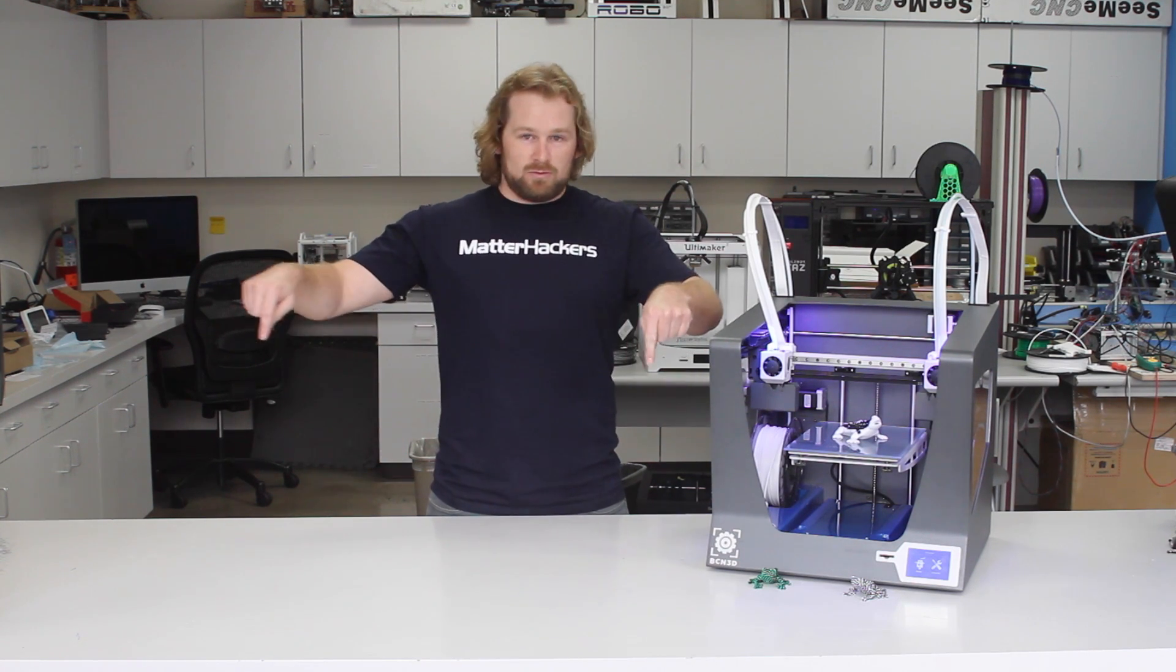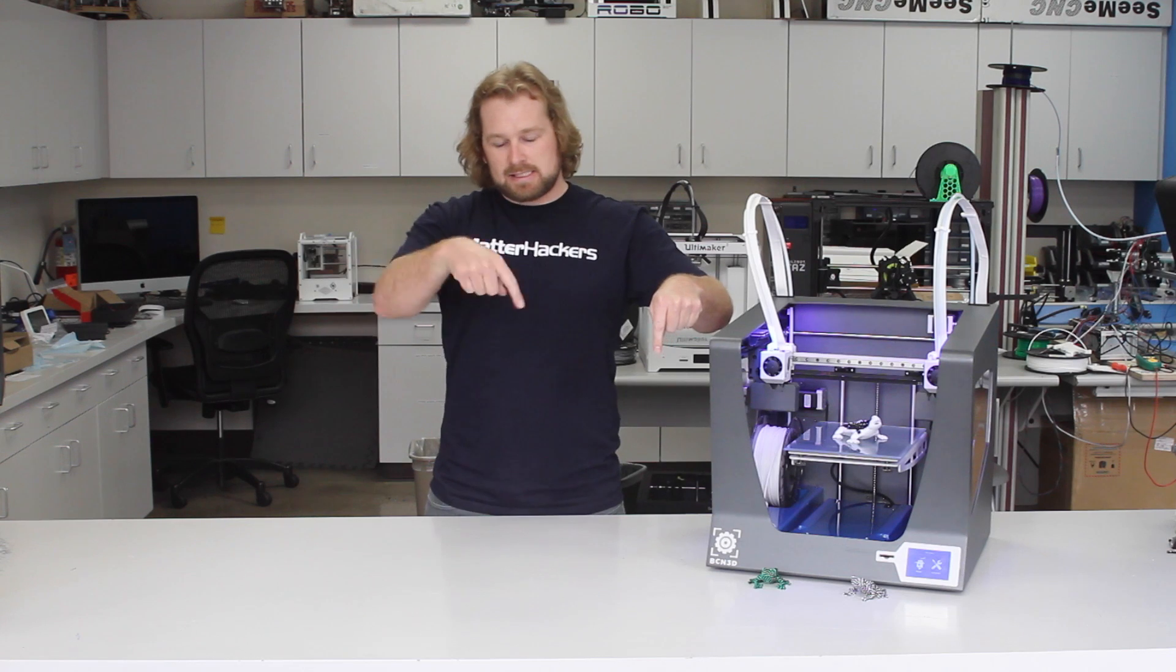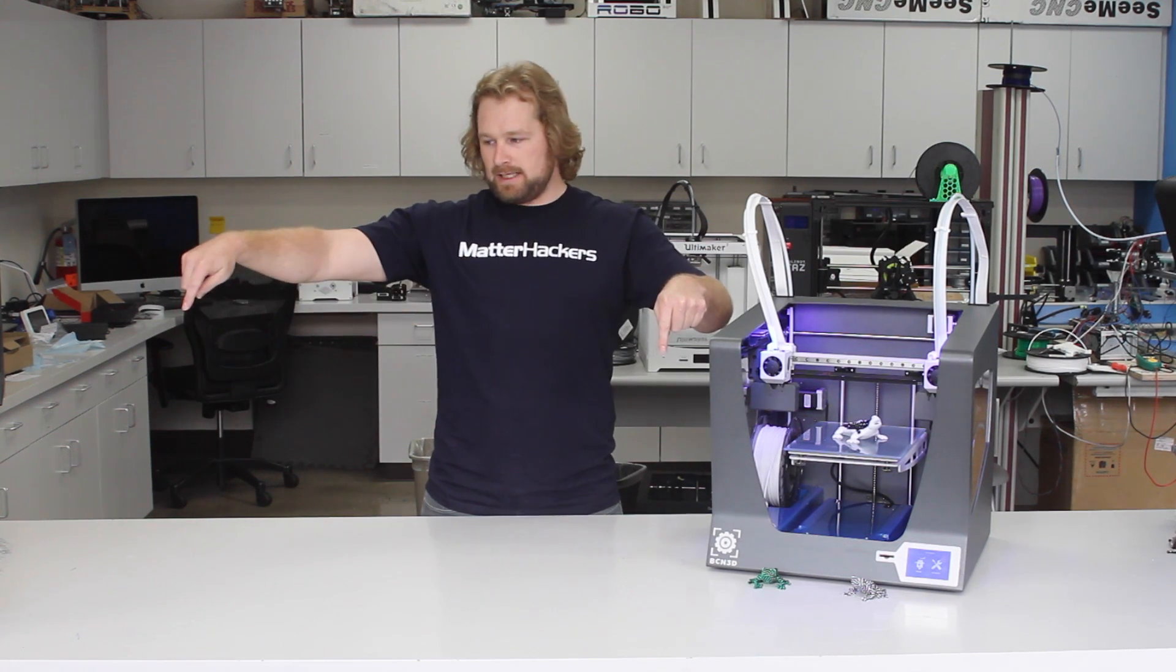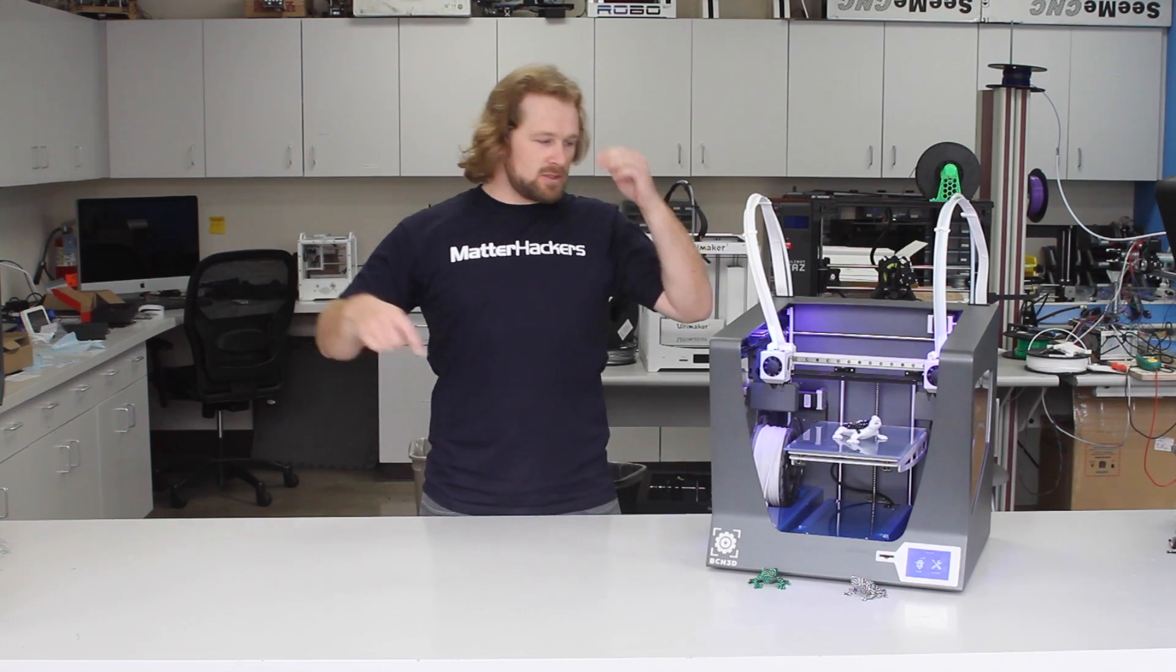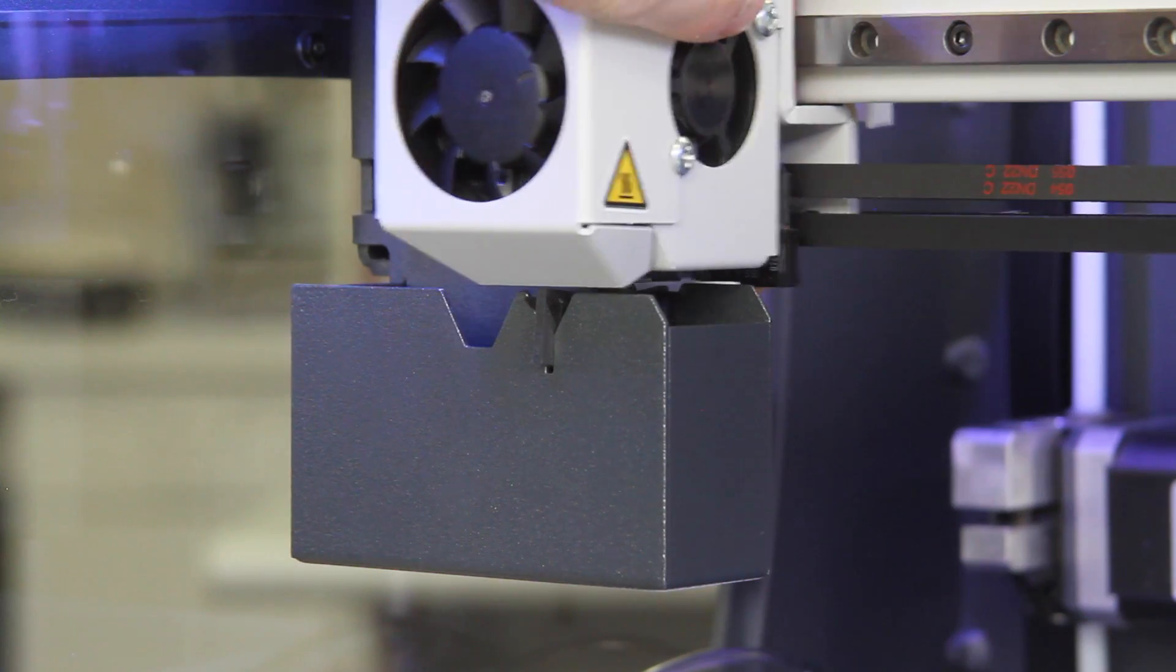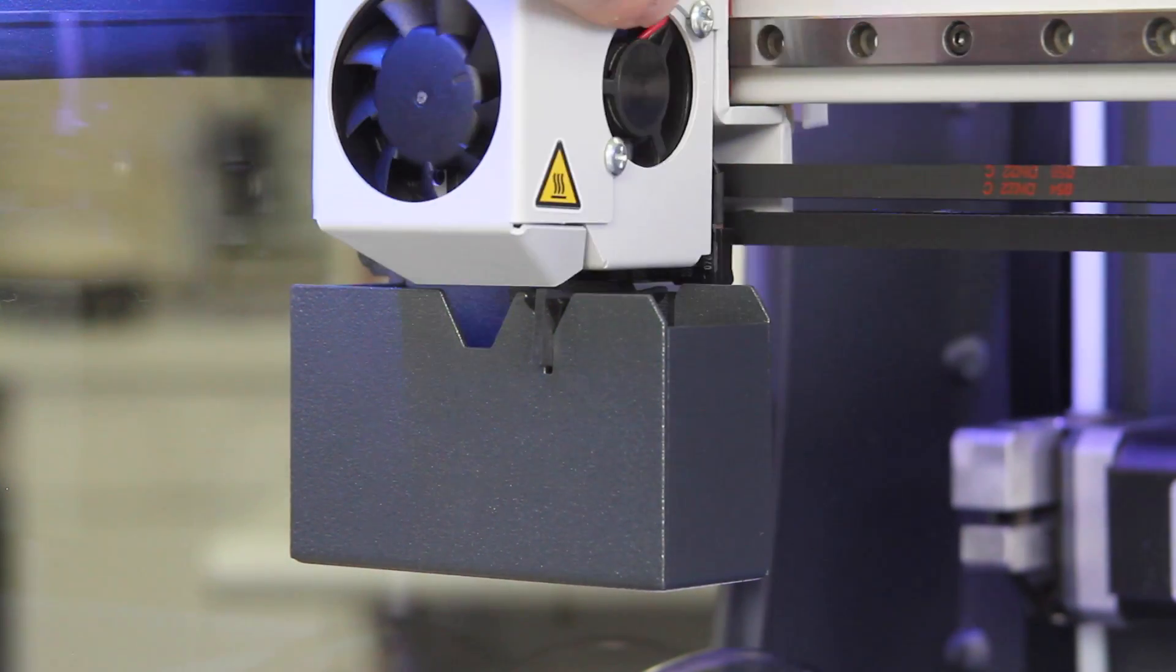This independent dual extrusion system means that we'll never get that mixing because this is happening over here, and then gets stored away. This one's moving over here, this gets stored away. You can see these buckets here. So there's a bucket on the left and a bucket on the right that catches any of that oozing.